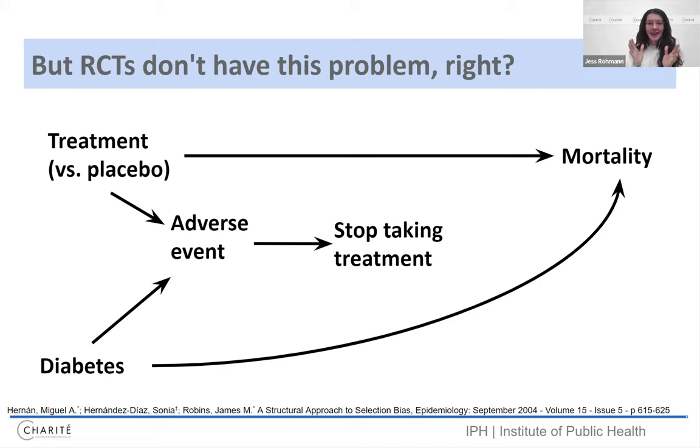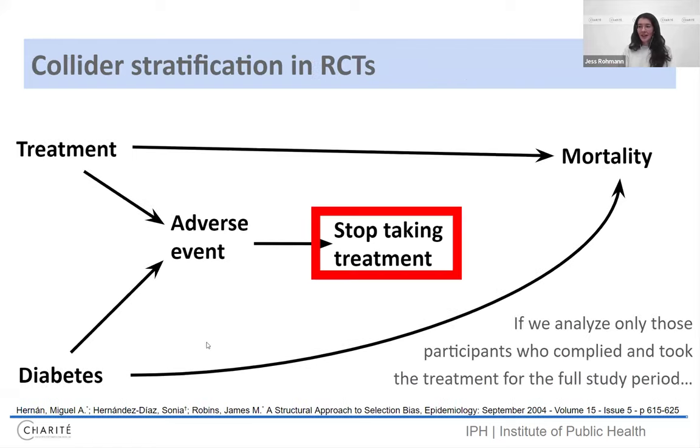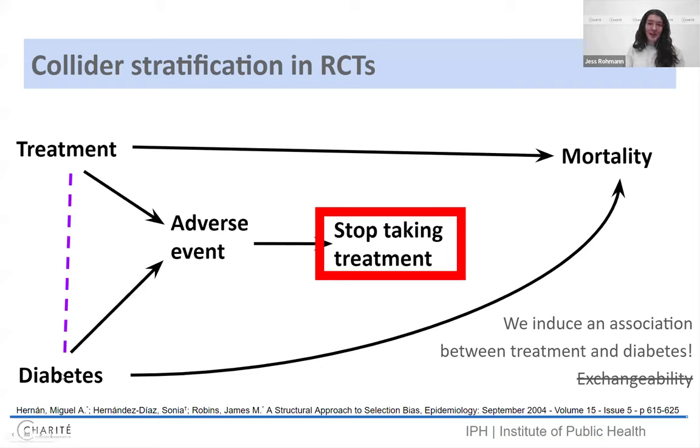But RCTs don't have this problem, right? Well, RCTs are great because we have randomization and then we don't have to worry about baseline confounding if it's done well. However, as RCTs go on, sometimes people have adverse events that make them stop taking the treatment. Here, you maybe already see what's coming. Two arrowheads colliding. Now, imagine that we don't have people in our study in the end who stop taking the treatment. They're not there anymore. If we adjust and we analyze only those who took the treatment until the end, we're conditioning on a child of this collider. Conditioning on the child of a collider does the same thing as conditioning on the collider itself, induces a relationship between the parents. Uh-oh. We opened a path in this case between treatment and the outcome mortality. And therefore, if we analyze the data from this RCT, we're going to actually get the wrong answer. This is known as post-randomization confounding that we actually introduce.